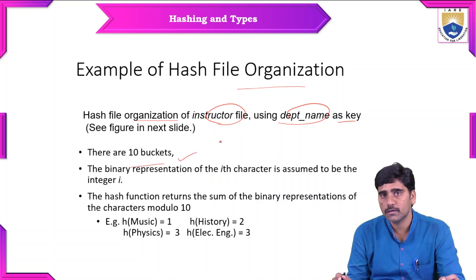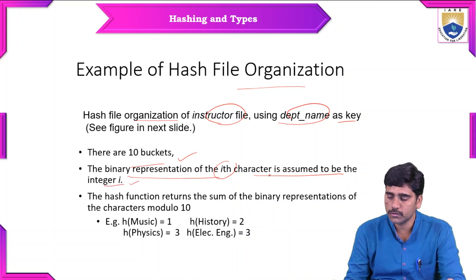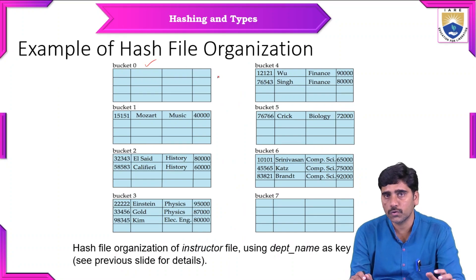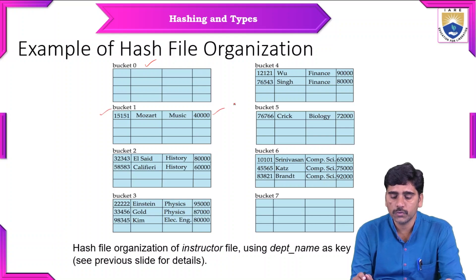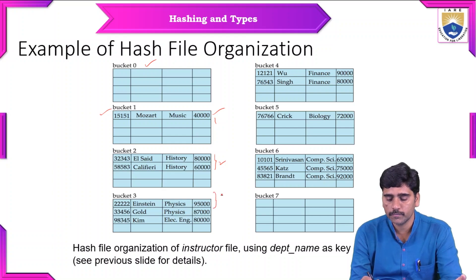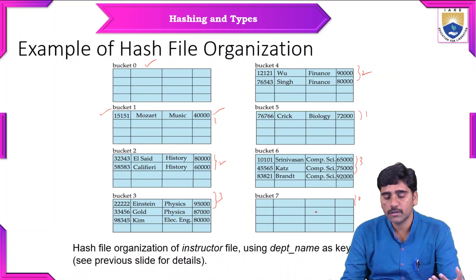There are 10 buckets. The binary representation of the i-th character is assumed to be the integer. The slide indicates an example of file organization. Bucket 0 contains no values, bucket 1 contains 1 value, bucket 2 contains 2 values. Each bucket is assigned search key values along with their data. The buckets display 3, 2, 1, 3, and 0 values respectively.